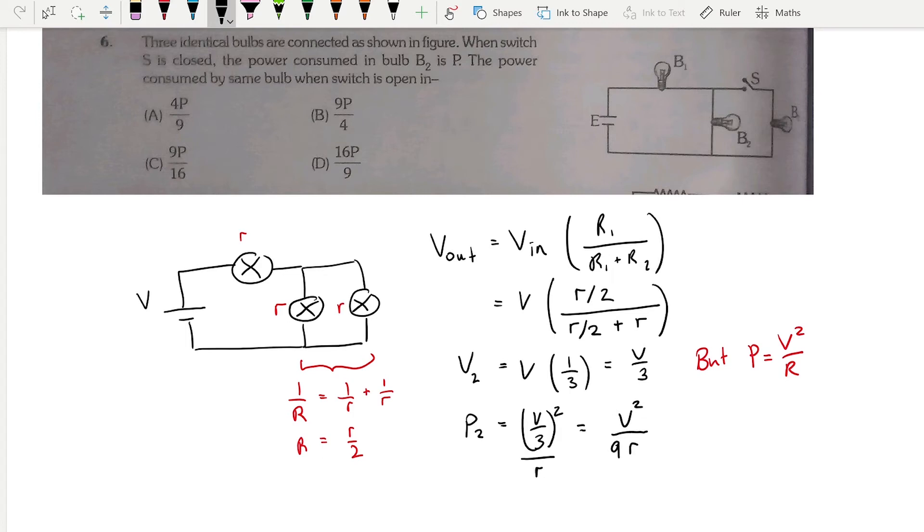The question tells me that when the switch is closed, which is our situation here, the power across p2 is just equal to p. So I'm going to say that this is equal to p. This expression is very important for us because it relates power to the voltage or EMF of the cell, which doesn't change. It's a constant. And you'll see in a moment how that is useful for us.